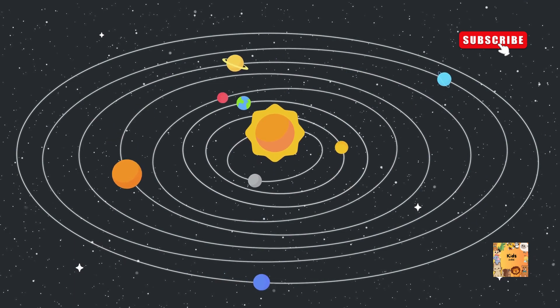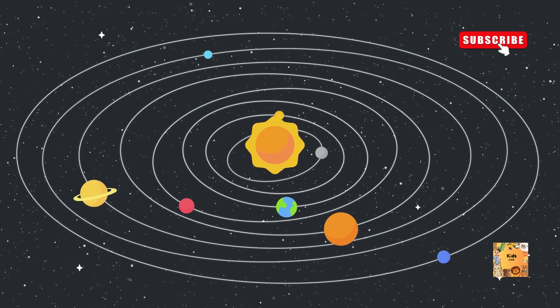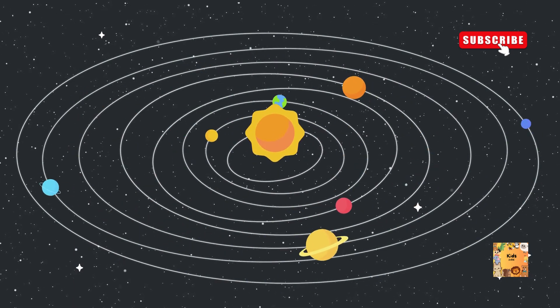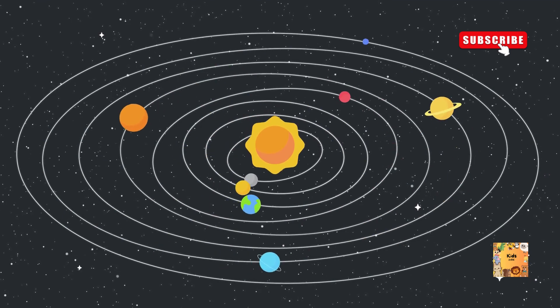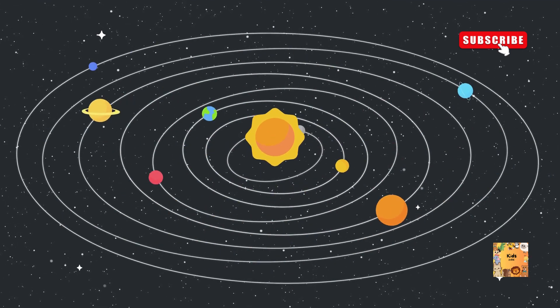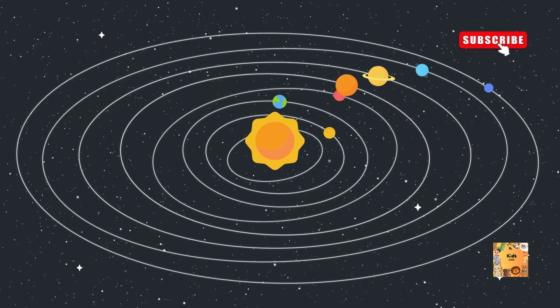Dwarf planets. Apart from the eight main planets, there are also dwarf planets like Pluto, Eris, and Ceres. These are smaller bodies that orbit the sun, but haven't cleared their orbits of other debris.